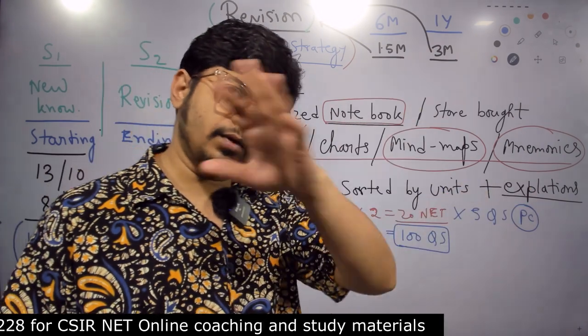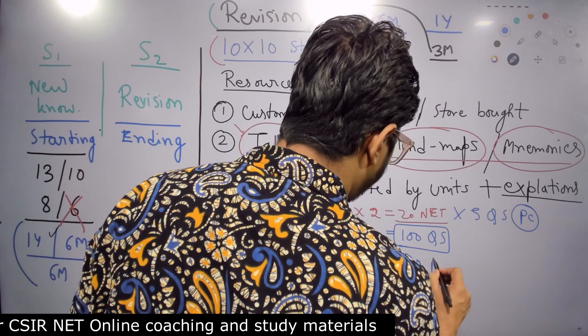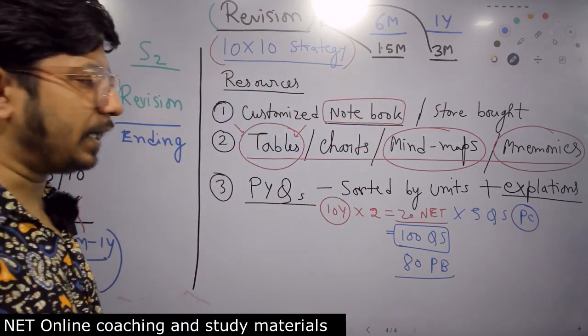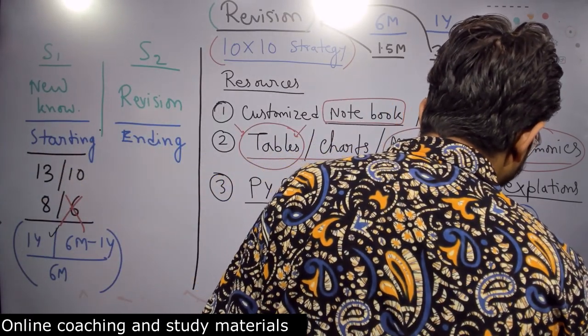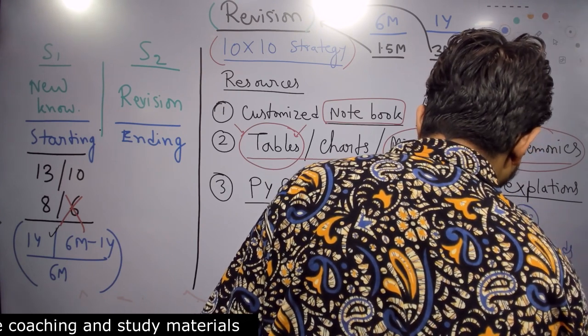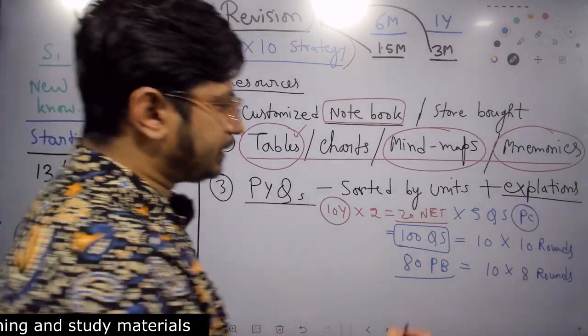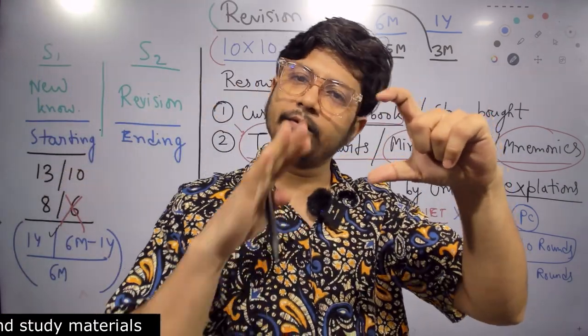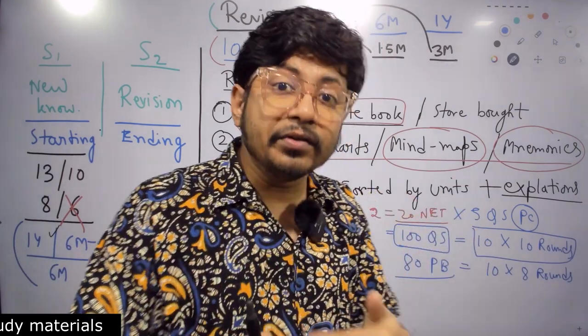So now what you need to do is basically divide this part C questions into 10 sections, 10 part C questions, 10 rounds. This is called the 10 by 10 strategy because you have 10 part C questions of unit 2, such 10 rounds are there.